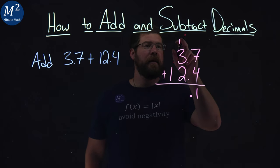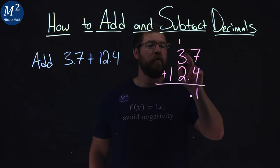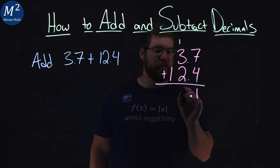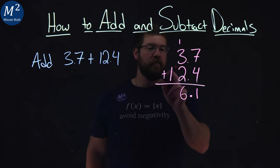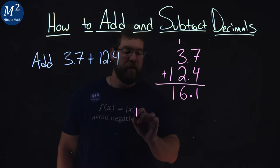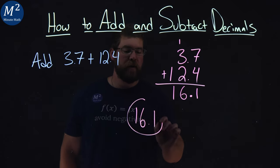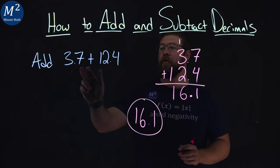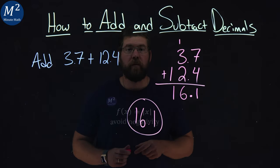From there, we add down the one's place. 1 plus 3 is 4, plus 2 is 6. Left is just this 1 comes down, and there we have it. 16.1 is the result of 3.7 plus 12.4.